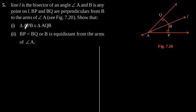So we need to show that triangle APB is congruent to triangle AQB, and BP is equal to BQ, or B is equidistant from the arms of angle A.